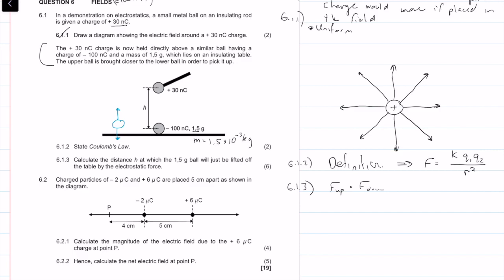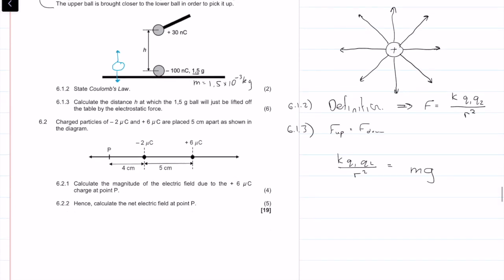The force up is going to be equal to KQ1Q2 over R squared, is equal to mass times gravity. Because we only have weight acting downwards and we have force electrostatic acting upwards.